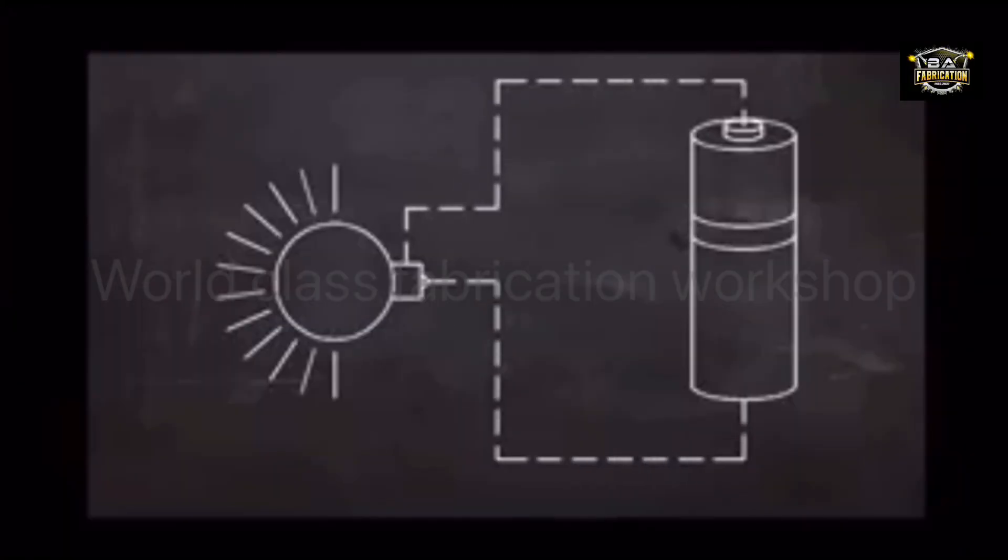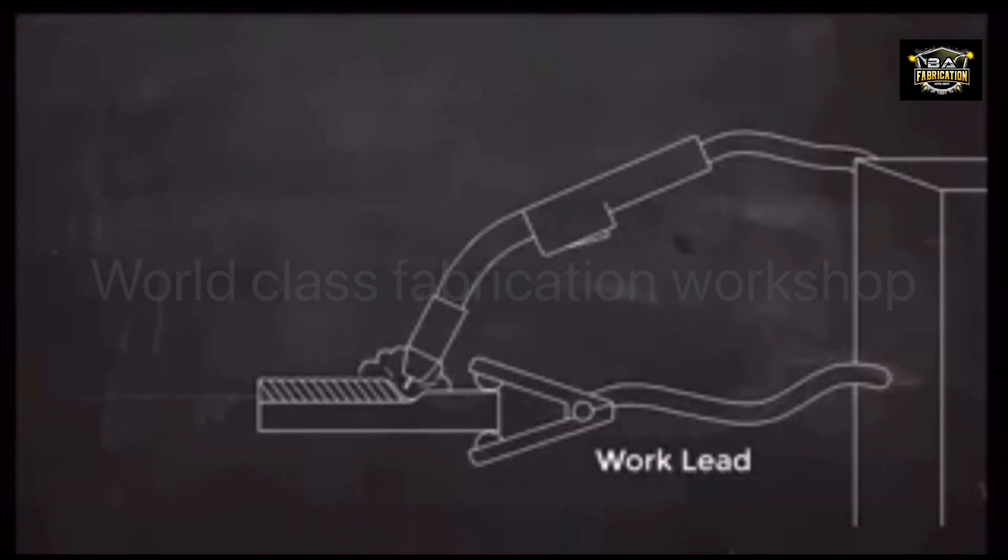In an electric circuit, the current flows in a loop. In flux-core welding, the current has to flow in a complete circle from the machine, to the gun, into the work, and back to the machine. A work lead is clamped to the work to complete the circuit from the workpiece back to the machine.